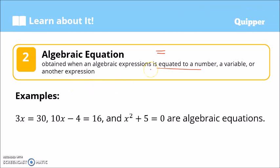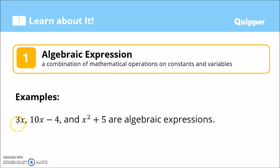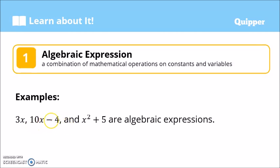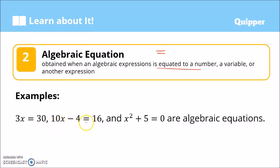When an algebraic expression has an equal sign added and another expression on the right side of the equal sign, then that expression becomes an algebraic equation. For example, 3x — our previous algebraic expression — is given an equal sign and a number to the right of it, so this now is an algebraic equation. Similarly, 10x minus 4 with an equal sign and a number on the right side is now an algebraic equation. And x squared plus 5 equals 0 is also an algebraic equation because of the equal sign.